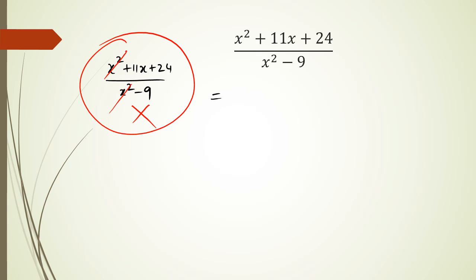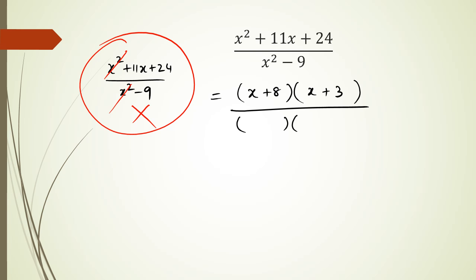What you need to do is factorize the numerator and denominator. For the numerator, find two numbers that multiply to 24 and add to 11 — that's 8 and 3, giving (x plus 8)(x plus 3). For the denominator, x squared minus 9 is a difference of two squares, giving (x minus 3)(x plus 3). Now (x plus 3) appears in both numerator and denominator — cancel it, and the simplified answer is (x plus 8) over (x minus 3).